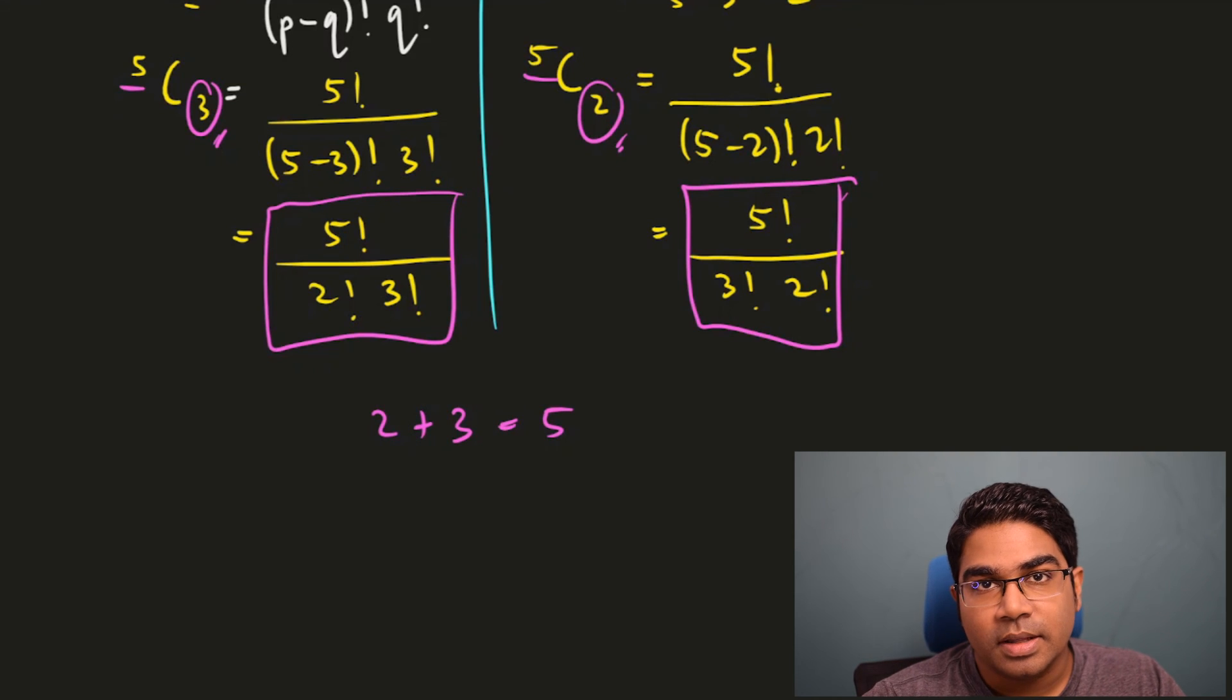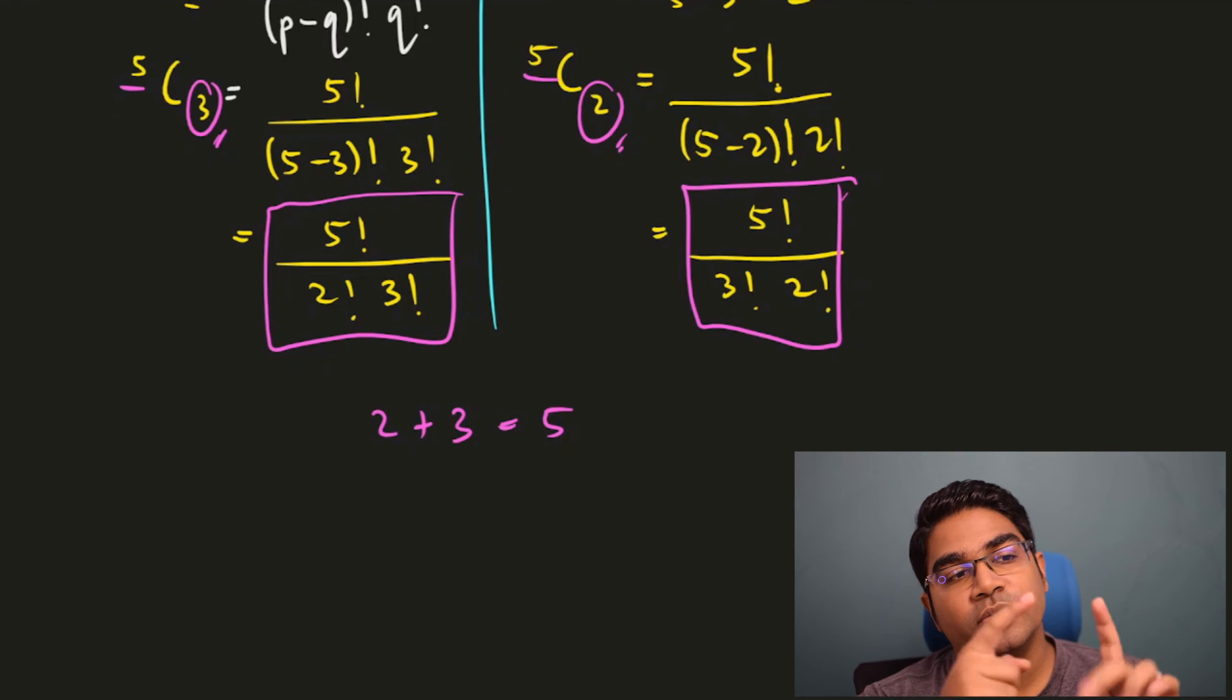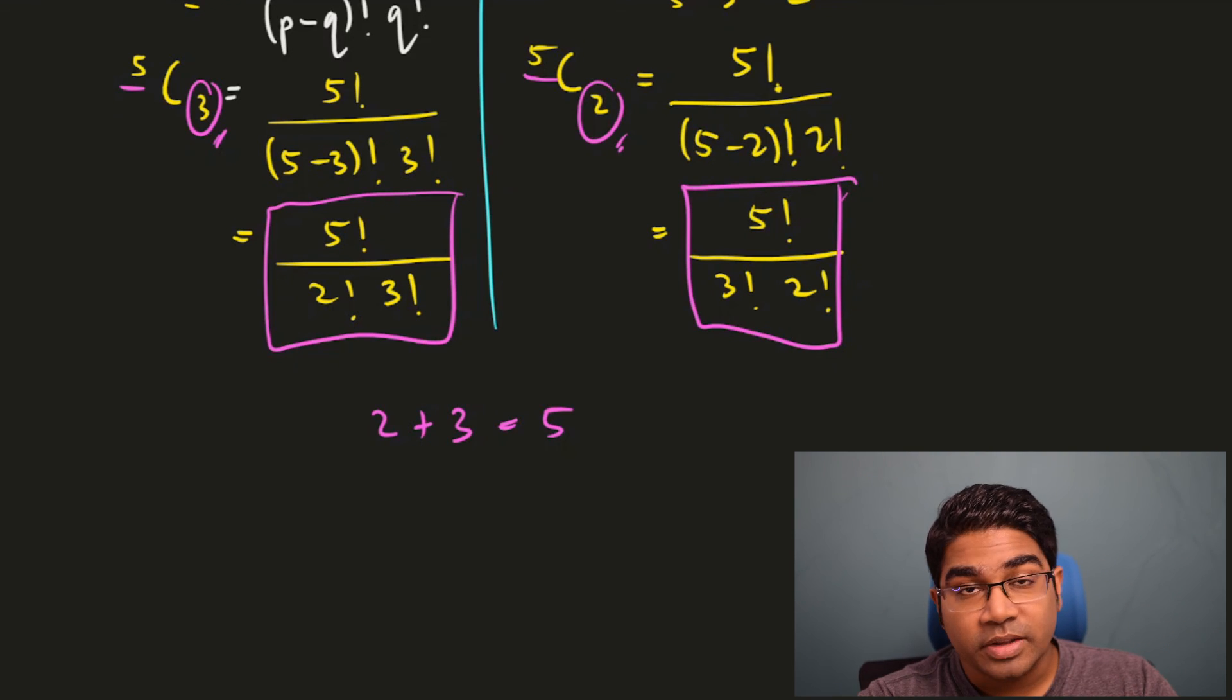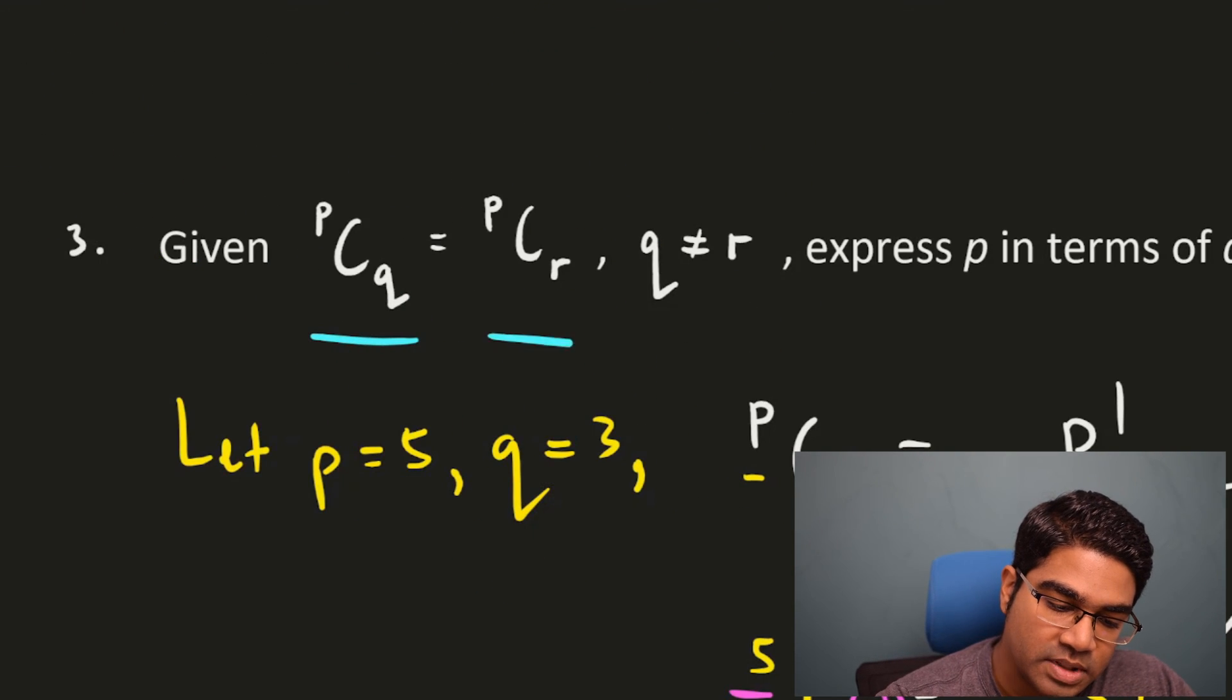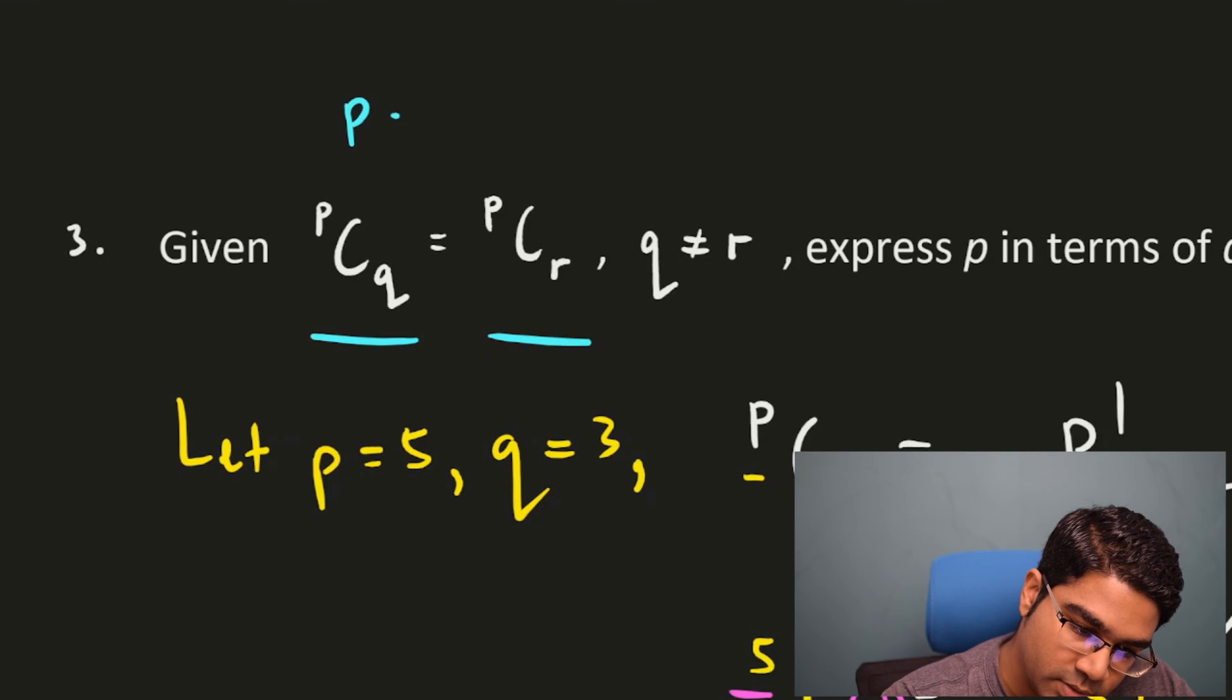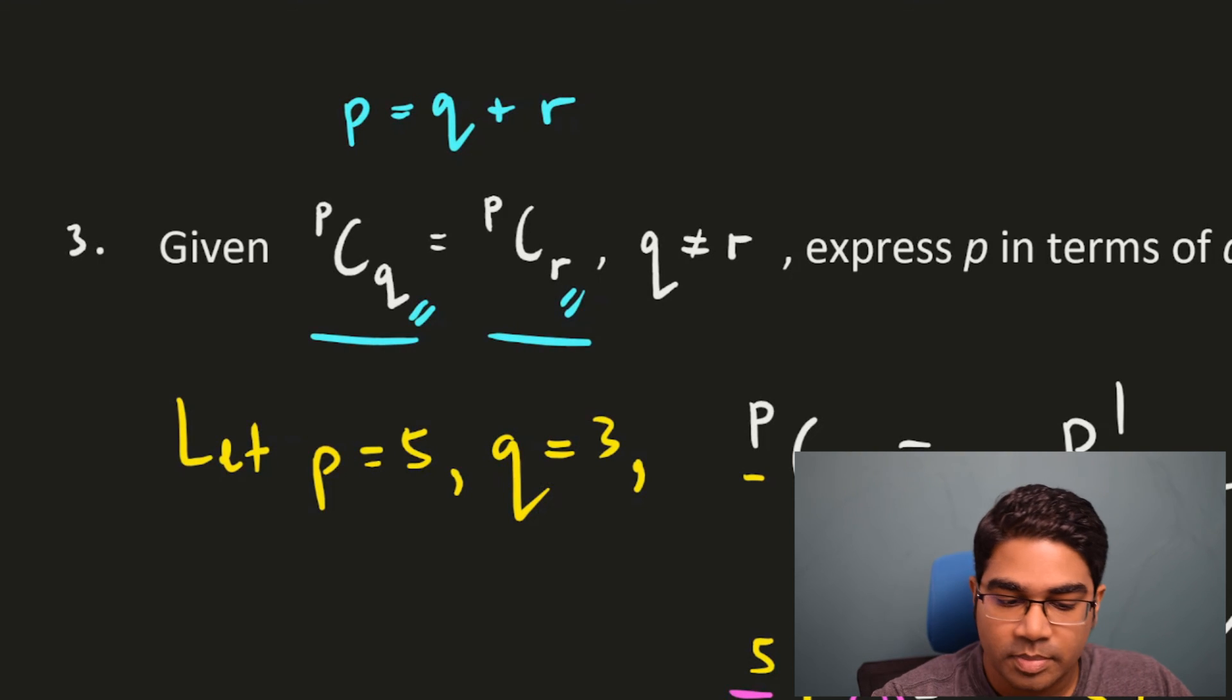When they are the same, then you will get the same value. You can test this for other values as well. You can try 1 and 4. 5C4 will be equals to 5C1. They will be the same. How then do we express P in terms of Q and R? If PCQ is the same as PCR, then there's only one possibility. P is equals to Q plus R. Q and R must sum up to be P.